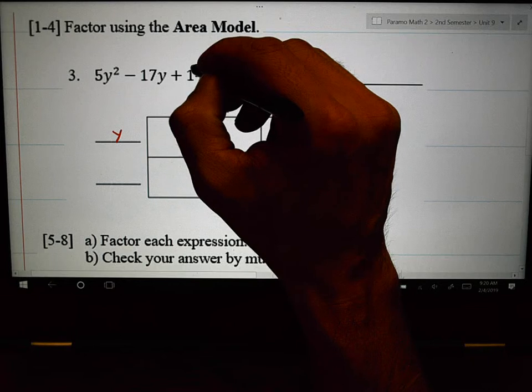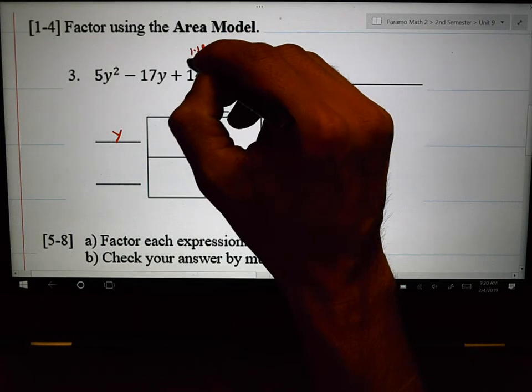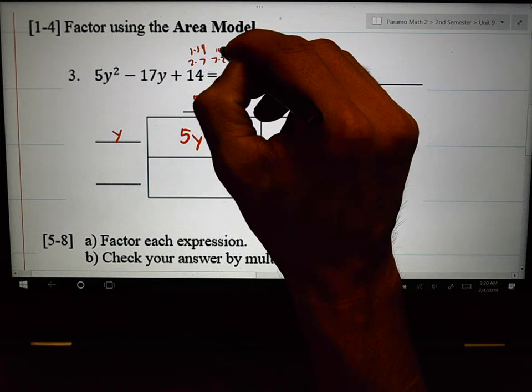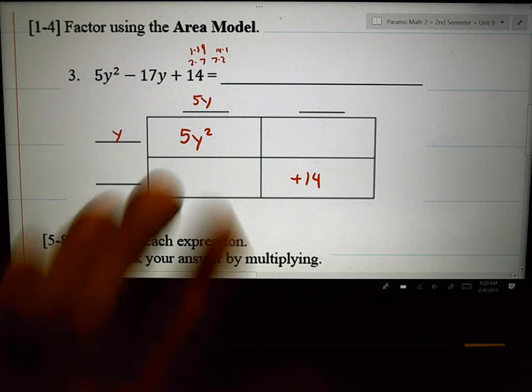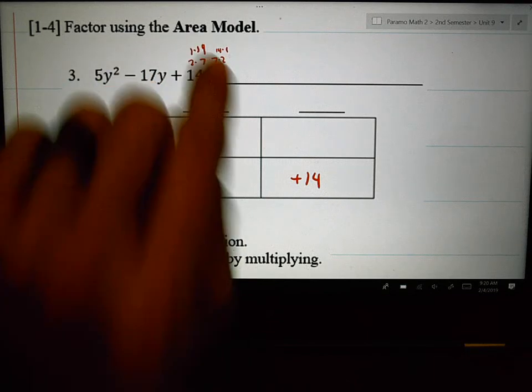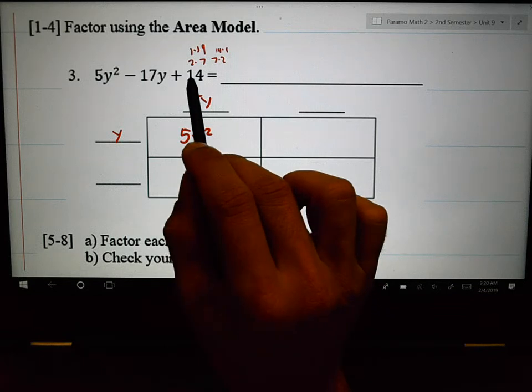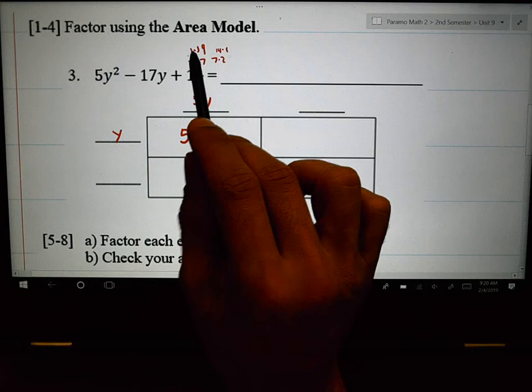Now, how am I going to get to 14? There's a couple choices I have. I have 1 times 14 and I have 2 times 7 or the other way around. 7 times 2, 14 times 1. So there's my list. I usually will put my list right above the number that I was doing the problem on. So, how do I get 14? A 2 times 7, a 7 times 2, a 14 times 1, or a 1 times 14.